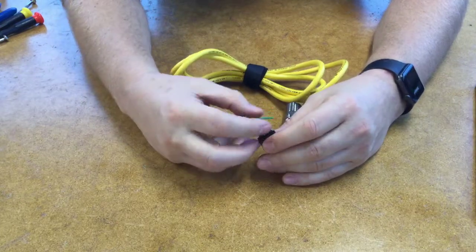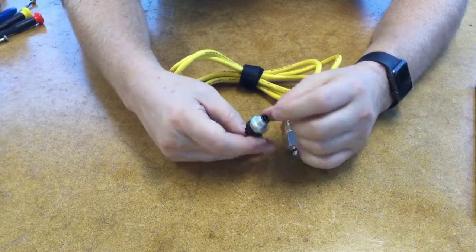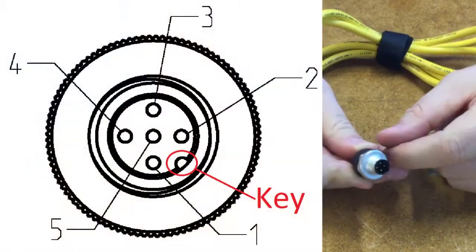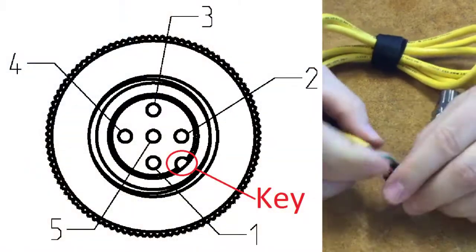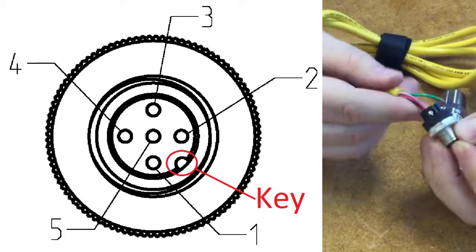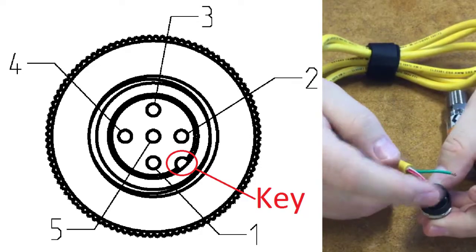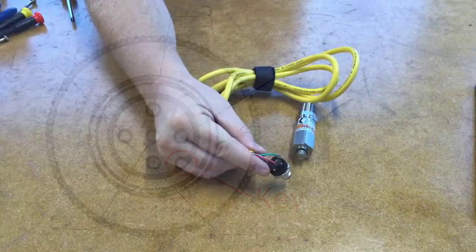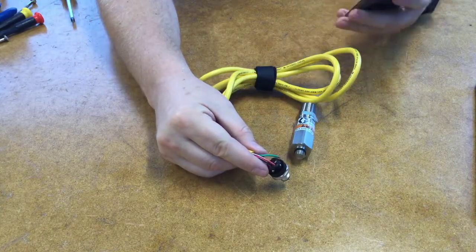One other thing though is if you look at this end, the keyway is always by one and two, so the three and four are going to be the ones opposite of that key. And when we flip it around and follow the key back we can tell that this is one and two, and then this is three and four.